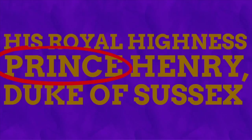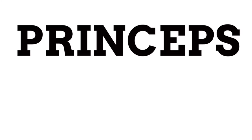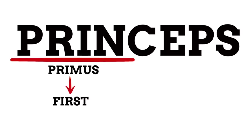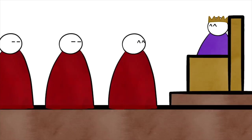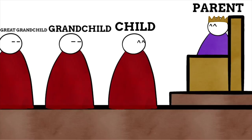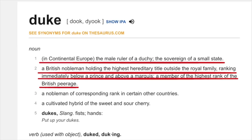What do these titles even mean? Let's look at 'prince' first — it is defined as a non-reigning male of a royal family, and in Great Britain, a son or grandson of a king or queen. The word comes from the Latin 'princeps' meaning 'first man' or 'ruler,' from 'primus' (first) and 'capere' (to take) — meaning 'the first to take,' as in first in line to take the throne. The easiest way to become a prince is by having a monarch for a parent, grandparent, or great-grandparent.